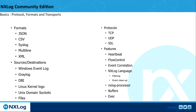XML is also available in the CE edition. For sources and destinations, Windows Event Log is a big one — we handle that with the MSVista Log module. We've got Graylog support for inputs and outputs, DBI in and out, kernel logs, Unix domain sockets, and files. For protocols, popular ones include TCP, UDP, and SSL. CE also has HTTP out, so if you need to send to an HTTP provider, we can do that.